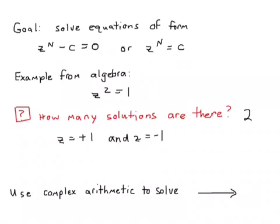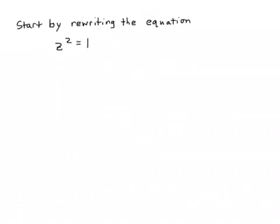That's pretty straightforward, and you probably remember that solution from previous classes. But we'll see that we can actually use some of the complex arithmetic we've been learning to solve this, and that will help us to solve more complicated equations. We start by rewriting this equation: z squared is equal to one, but we can write one as equal to one times e to the j two pi k, where k is equal to an integer.